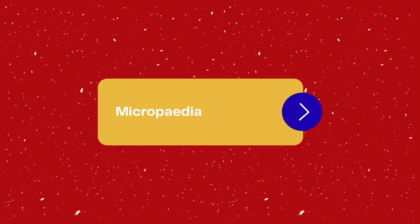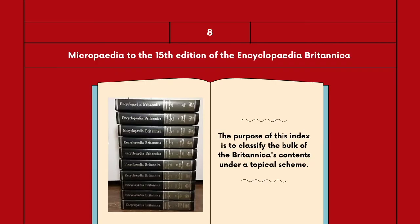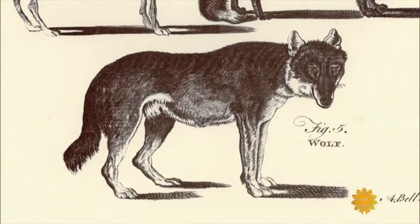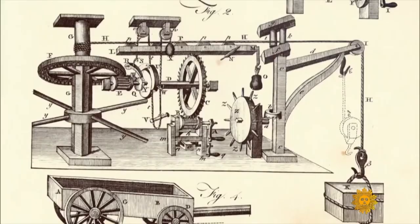The Micropedia to the 15th edition of the Encyclopedia Britannica — the purpose of this index is to classify the bulk of the Britannica's contents under a topical scheme rather than the traditional alphabetical arrangement, with the objective of providing the user with a guide to the Britannica and as a tool for the systematic study of a topic and its related aspects of interest.